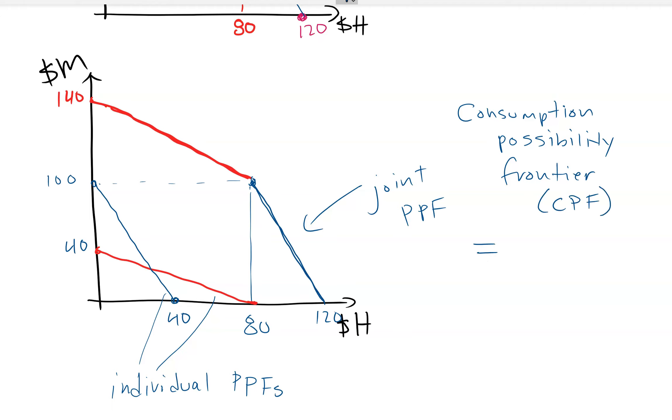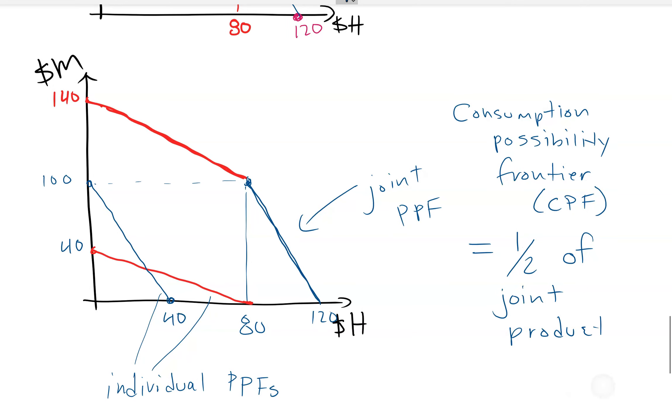So for purposes of the notes, I just call it a CPF. And we assume they can consume half of joint production. So we assume, a second assumption we're making that when they're married together, they're sharing equally. Now, this may not be the case.